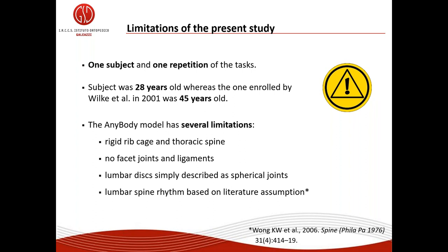Regarding limitations of the study: we evaluated one subject and one repetition for each task. Our subject was younger — 28 years old — compared to Wilke's subject at 45. The AnyBody model itself has several limitations: the rib cage is modelled as a single rigid lumped segment including the thoracic spine tract; no facet joints and ligaments are modelled; the lumbar discs are simply described as spherical joints; and the lumbar spine rhythm is based on literal assumptions.